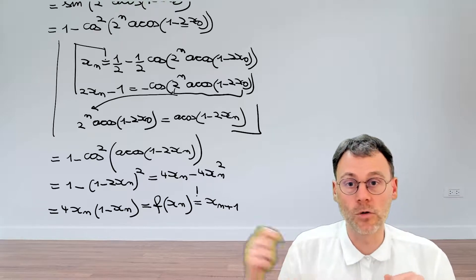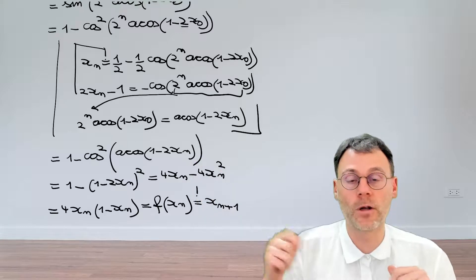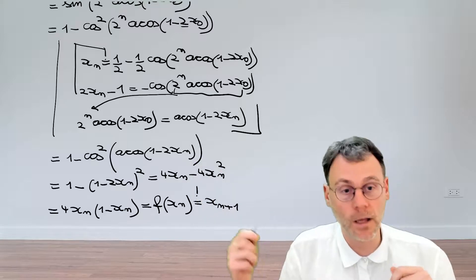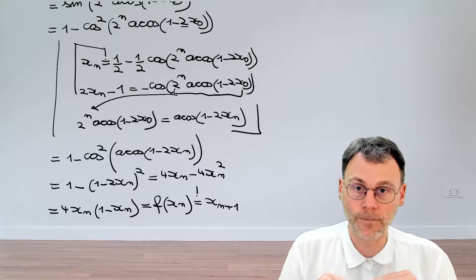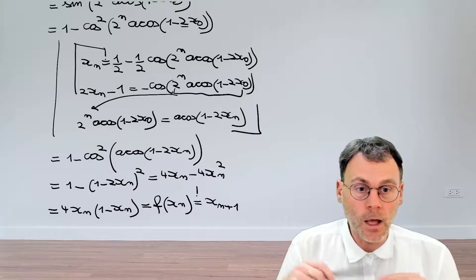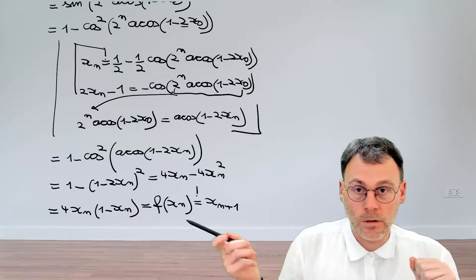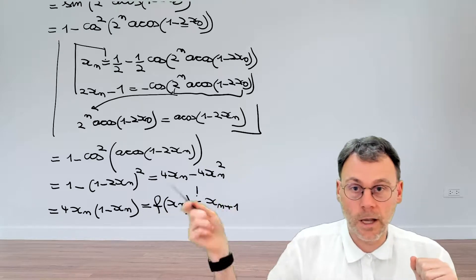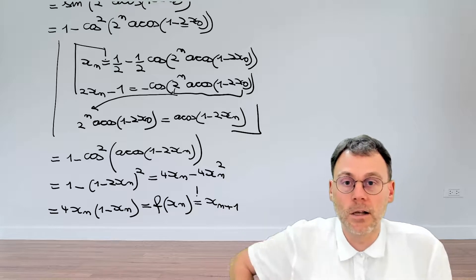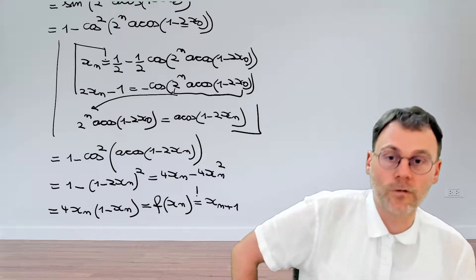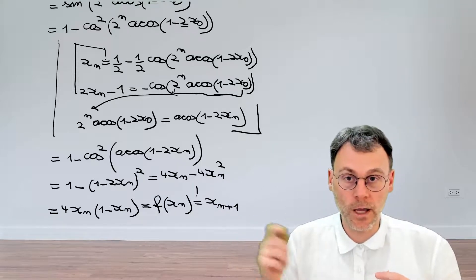Writing this as four x_n times one minus x_n, we clearly see f of x_n appearing, which is indeed x_{n+1} — exactly what we needed. So we have shown that if this formula is valid for n, then it's also valid for n plus 1. That was a fun little exercise with lots of things cancelling because of trigonometric identities.